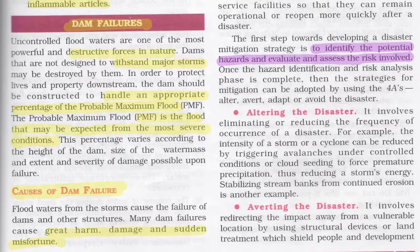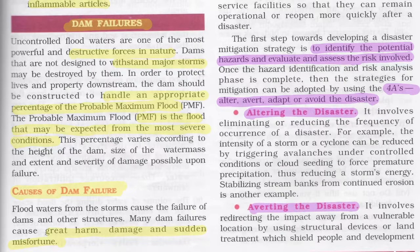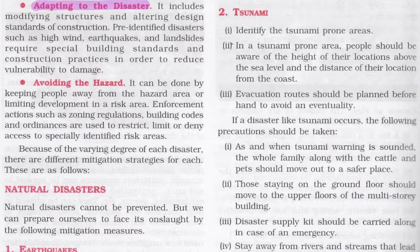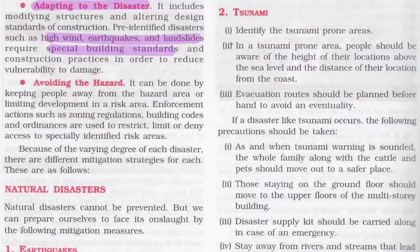Once hazard identification and risk analysis are complete, mitigation strategies can be adopted using the four A's: Alter, Avert, Adapt, or Avoid. Altering the disaster involves eliminating or reducing the frequency of its occurrence. Averting the disaster involves redirecting the impact away from vulnerable locations using structural devices or land treatment. Adapting includes modifying structures and altering design standards for predefined disasters like high winds, earthquakes, and landslides. Avoiding the hazard means keeping people away from hazard areas or limiting development in risk areas.